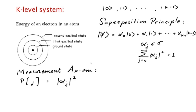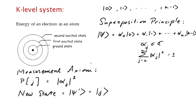The fact that the state is normalized means that with probability 1 we see some outcome j between 0 and k minus 1. Moreover, the measurement disturbs the system, and the new state psi prime is the jth excited state if the measurement outcome was j.